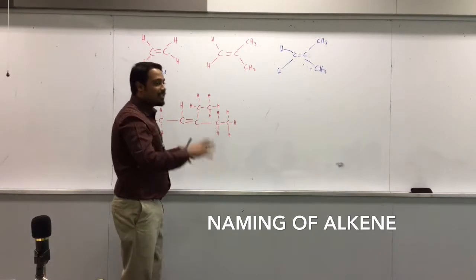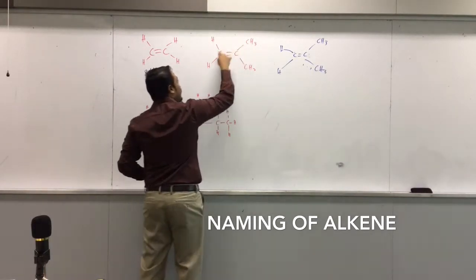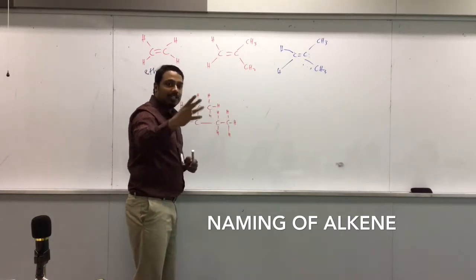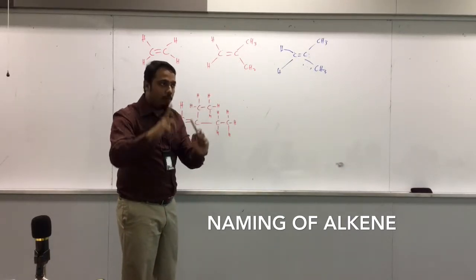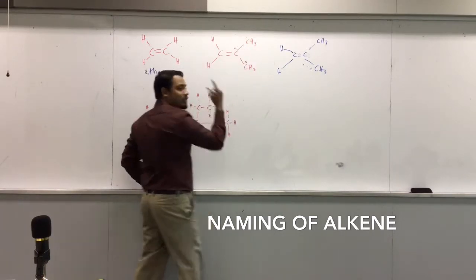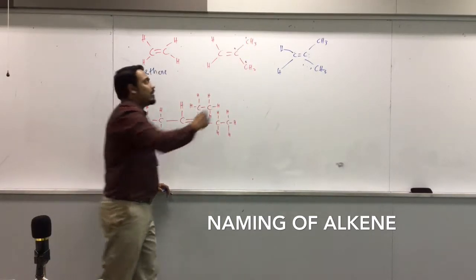How do I name this same thing? I'm going to count one, two, three. Remember, I need to count, and the chain must include the double bond. Which means common mistake will be counting like this. One, two, three. What's the problem with counting like that?